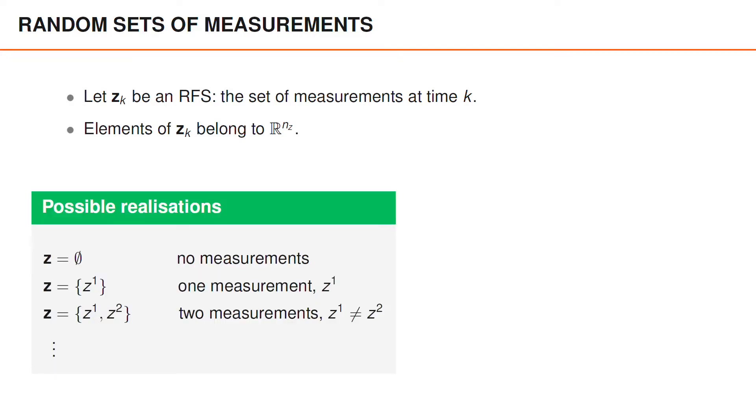Here are a few possible realizations. If we do not observe any measurements, the set of measurements is empty. If we observe a single measurement z1, the set of measurements, boldface z, contains a single vector z1. If we observe two measurement vectors z1 and z2, the set of measurements contains two elements z1 and z2.